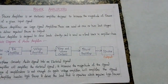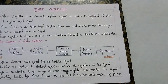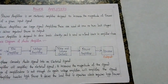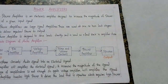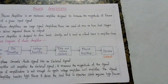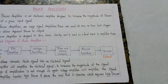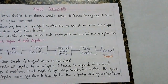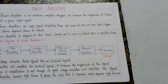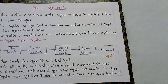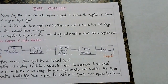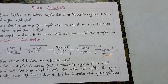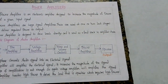In a cascaded amplifier, if two stages use the same configuration — that is the CE configuration at both stages — then we say it is a cascaded amplifier. Coming to the cascode amplifier, if we use one configuration at one amplifier stage and another configuration at another amplifier stage, we say it is a cascode amplifier.